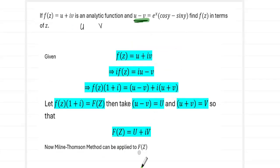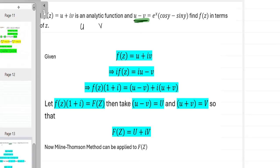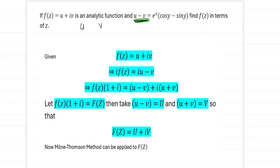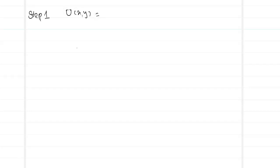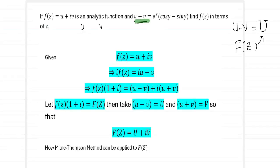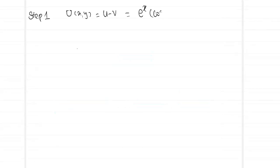The given capital U is u - v = e^x(cos y - sin y), which is the real part of capital F(z). Applying the Milne Thomson method: Step 1 — compute the partial derivatives of capital U with respect to x and y. With respect to x, (cos y - sin y) is constant so differentiating e^x gives e^x(cos y - sin y). With respect to y, e^x is constant, giving e^x(-sin y - cos y).